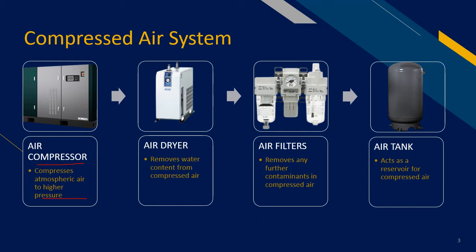Next, on to the air dryer. The function of the dryer is to remove water content from the compressed air. We then have the air filters. The compressed air is taken from the atmosphere, which contains contaminant particles such as dust and hydrocarbon particles. The air filters function to remove such contaminants from the compressed air before being sent to the production site. And finally, the air tank, or the receiver tank.